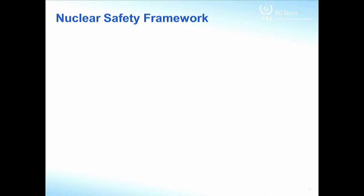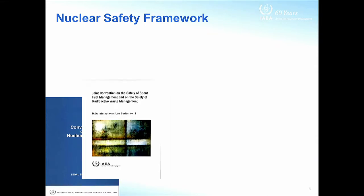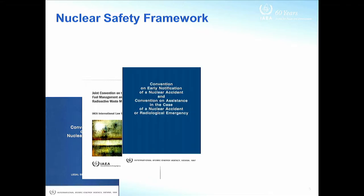Let's have a quick look at the most important instruments in the area of nuclear safety. Starting with the binding instruments, we have the Convention on Nuclear Safety, the Joint Convention on the Safety of Spent Fuel Management and on the Safety of Radioactive Waste Management, and two conventions on Emergency Preparedness and Response: the Convention on Early Notification of a Nuclear Accident, and the Convention on Assistance in Case of a Nuclear Accident or Radiological Emergency.